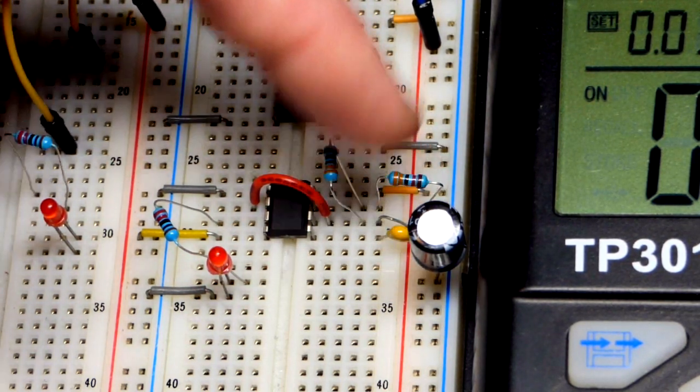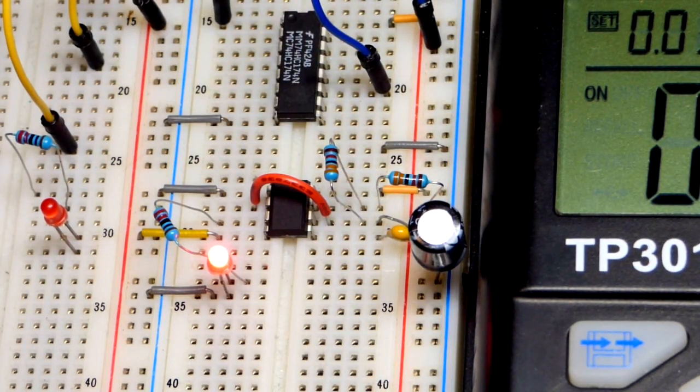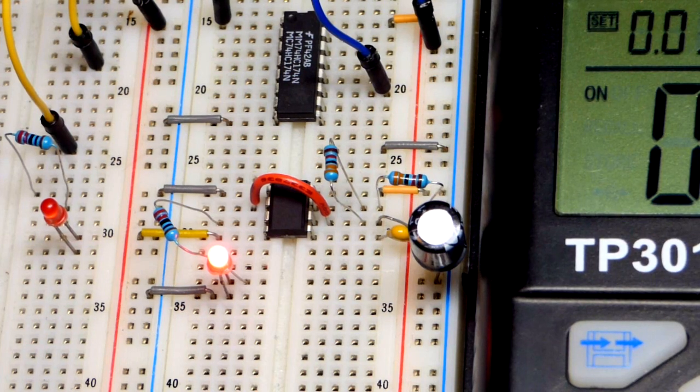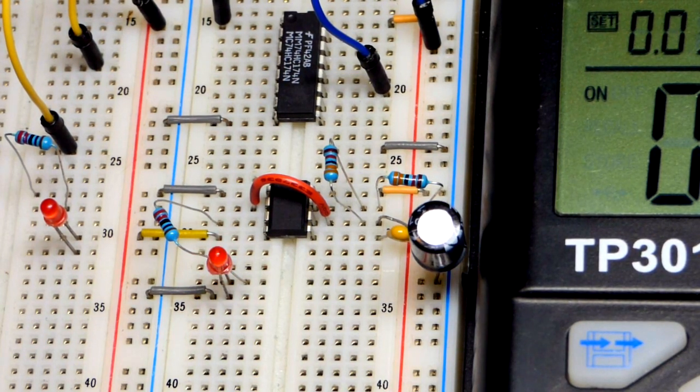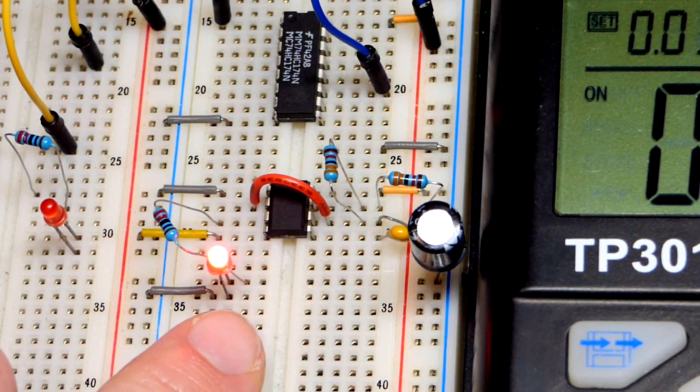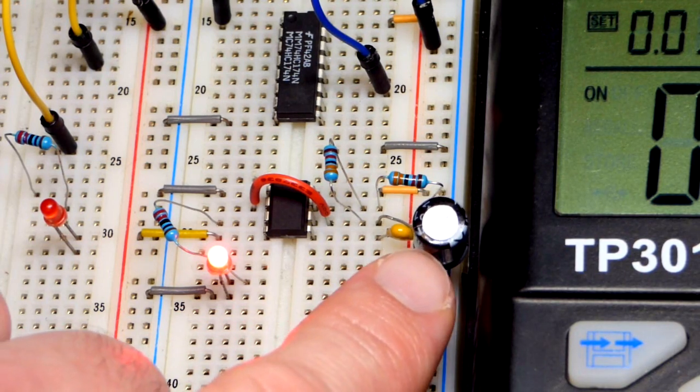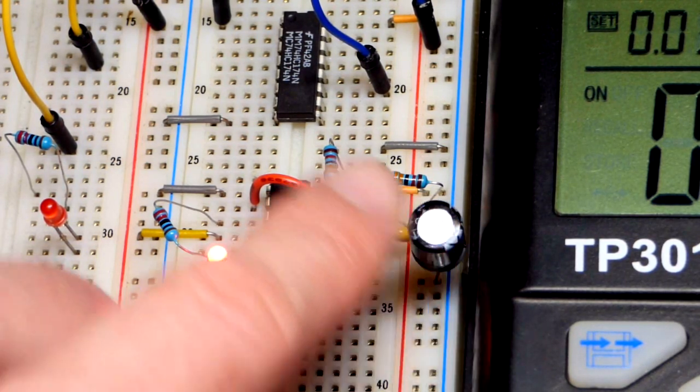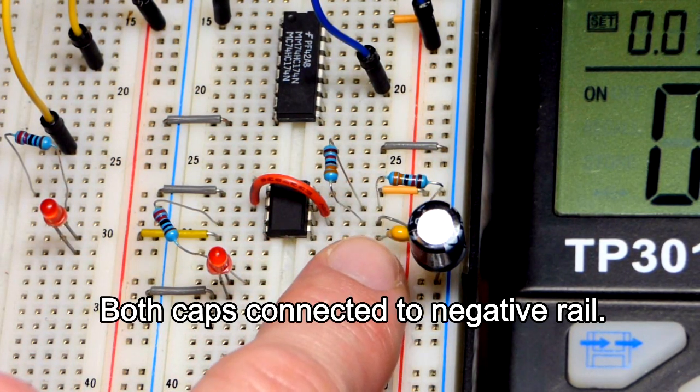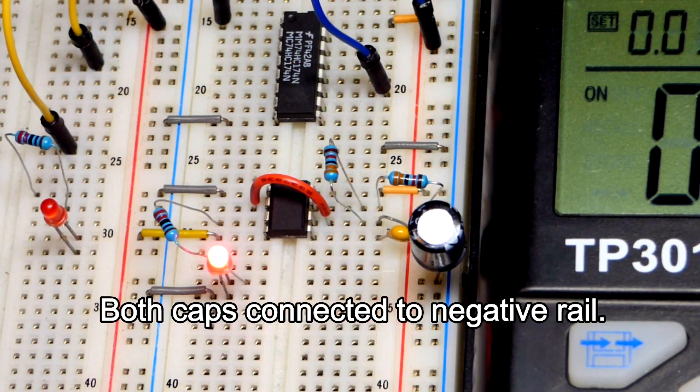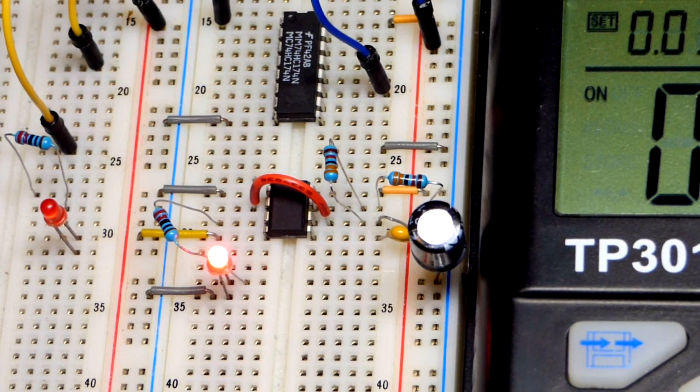The LED here is on about twice as long. That's it for the 555 timer. It's a 100 microfarad. If you're interested in component values, that is a 10 nanofarad.